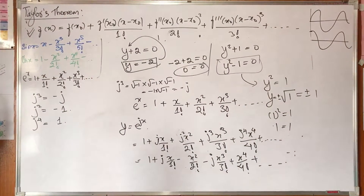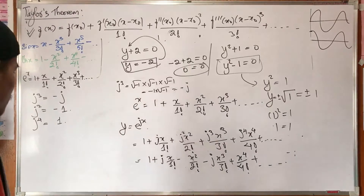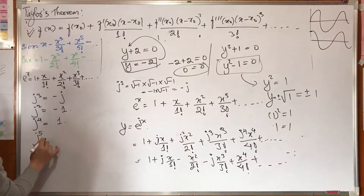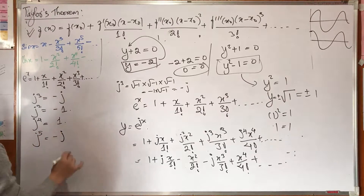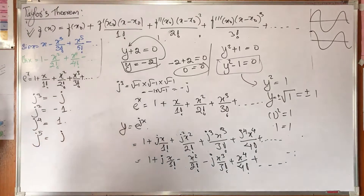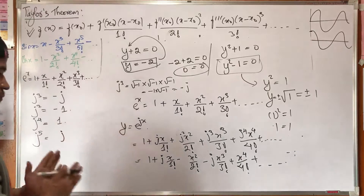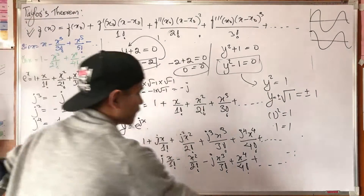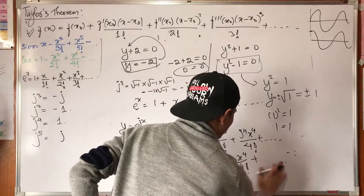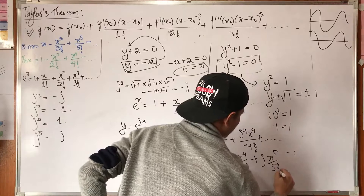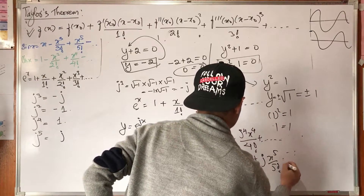For j to the power of 5: j to the power of 5 equals j times j to the power of 4, which equals j times 1, so minus j becomes plus j. Therefore the fifth term gives plus j times x to the power of 5 over 5 factorial, and so on.